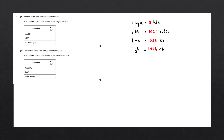I've written out the first four conversions we can make when measuring the size of computer memory. The first conversion is that one byte is equivalent to eight bits. One kilobyte is equivalent to 1024 bytes. One megabyte is equivalent to 1024 kilobytes, and one gigabyte is equivalent to 1024 megabytes.